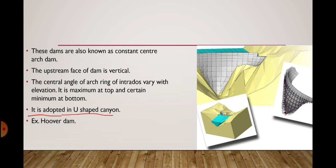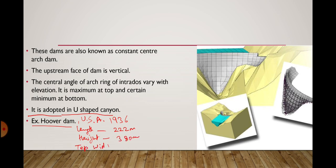The centers of extrados, intrados, and the centerline of the horizontal arch ring at various elevations all lie on a straight vertical line, so these dams are also known as constant center arch dams. This dam is adopted in U-shaped canyons. An example is Hoover Dam in the USA, constructed in 1936 — length 222 m, height 380 m, top width 13.7 m, and base thickness 201 m.